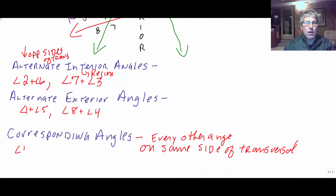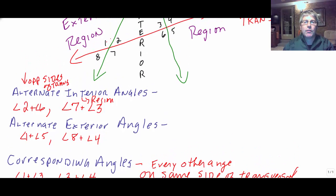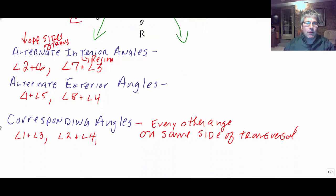And then we have a couple more pairs on the other side of the transeversal, on the bottom part of the transversal. We could say angle 8 and angle 6 and 7 and 5. So angle 8 and angle 6 and angle 7 and angle 5.